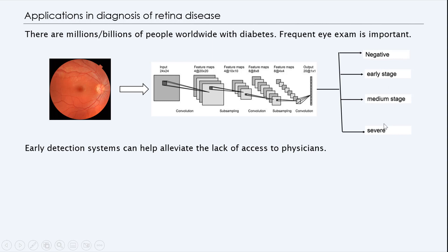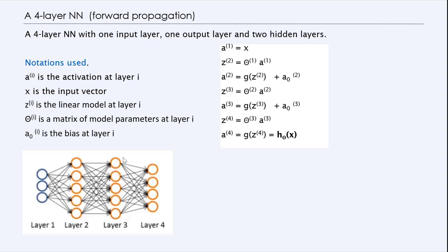Whether there's no defect, negative, early stage, medium stage, or severe. So this is done by taking a picture and running this through multiple layers, what we call convolution, and sampling, and subsampling, and convolution, and finally providing an output which indicates which one of these things it's likely. You still want a physician to look at this, for sure, but the early detection systems can help alleviate the lack of access to physicians for many people in all parts of the world.